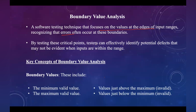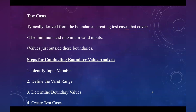Testers can effectively identify potential defects that may not be evident when inputs are within the range. Regarding boundary values, they can be the minimum valid value or maximum valid value. If you take values on the invalid side — just above the maximum or just below the minimum — those come under the invalid part. Test cases are typically derived from the boundaries, covering the minimum and maximum valid inputs as well as values that lie just outside the boundaries.